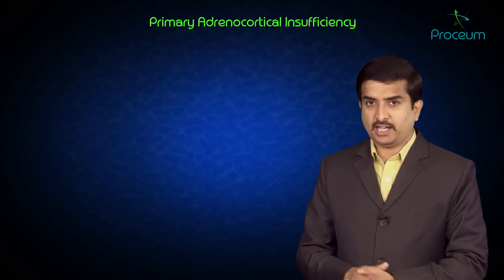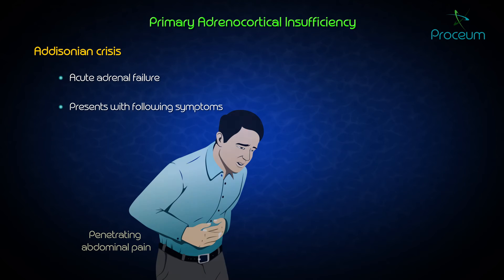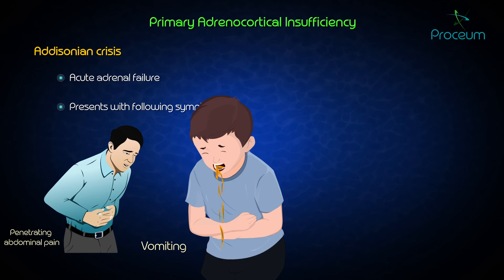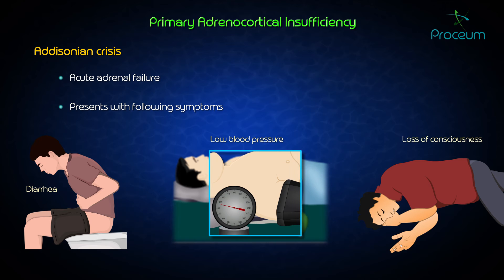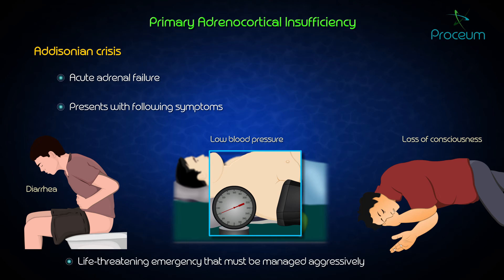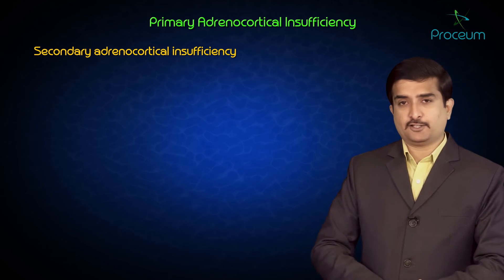Addisonian crisis is an acute adrenal failure presenting with severe, excruciating abdominal pain always accompanied by vomiting, diarrhea, low blood pressure, and eventually loss of consciousness. This condition is life-threatening and must be managed aggressively and immediately.